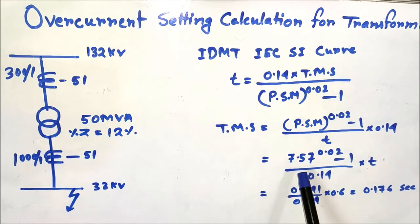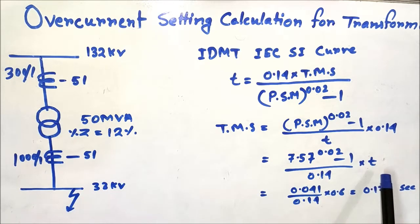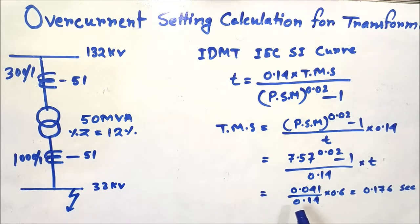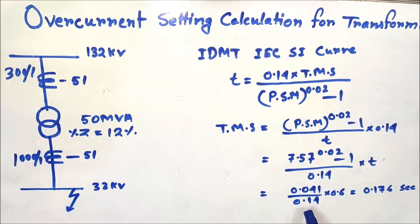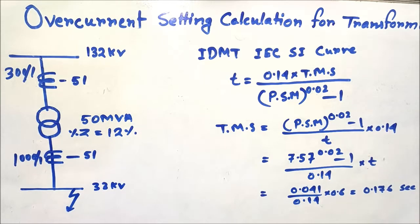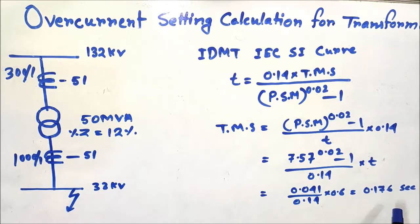Substituting values: PSM is 7.57, so 7.57^0.02 − 1 equals 0.04. Then TMS = 0.04 × 0.6 / 0.14, which comes to 0.176 seconds. So the time multiplier setting for the LV overcurrent relay (51 LV) should be approximately 0.176, or you can round it to 0.18.